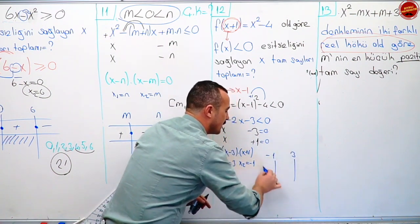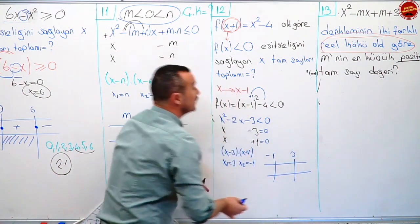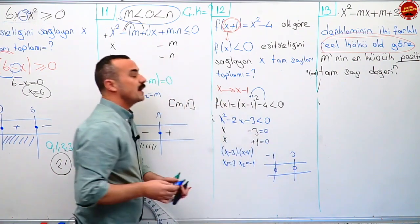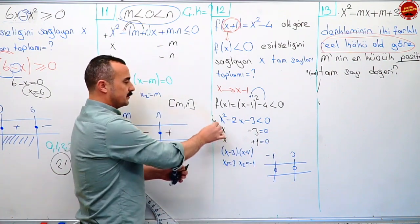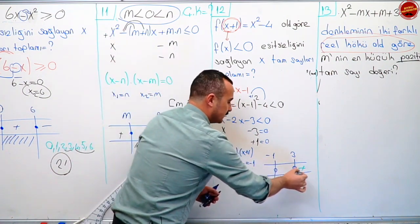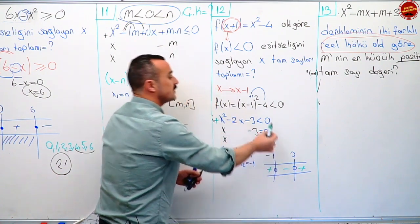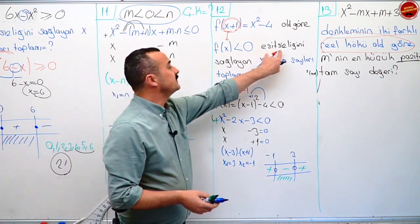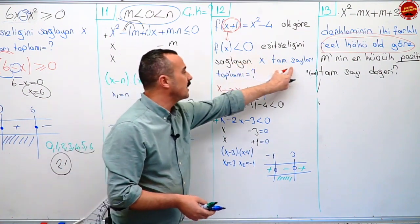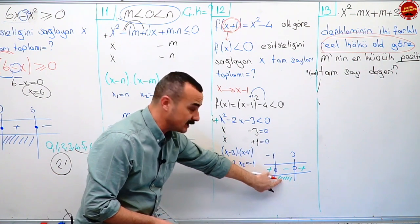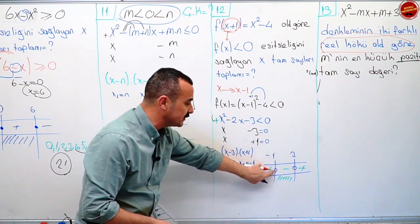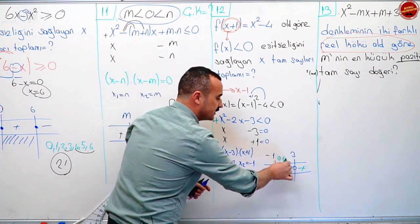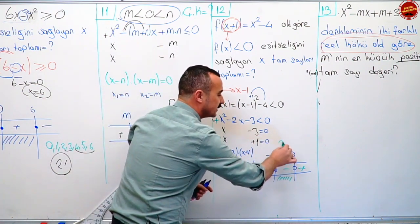Hemen bakıyorum. Eşitlik var mı yok mu? Yok. O zaman içlerini boş bırakıyorum. En büyük dereceli terim işaretine bakıyorum, artı. O zaman artı, eksi, artı. Benden küçük olduğu yerleri istiyordu. Eşitsizliği sağlayan x tam sayıları toplamı nedir? O zaman buradaki tam sayılar lazım. Eşitlik olmadığı için eksi biri de alamayacağım, üçü de alamayacağım. O zaman burada sıfır, bir, iki var. Toplamları eşittir üç.